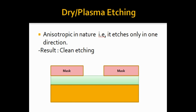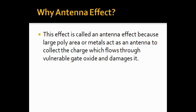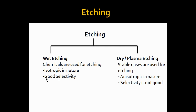Plasma etching is a broad topic on its own. For now, just know that during plasma etching, the metal or poly exposed in plasma accumulates certain charges, and once it reaches a certain potential, it discharges through the gate, damaging the gate oxide. It is called the antenna effect because the large poly area or metal exposed in plasma acts as an antenna to collect charge.